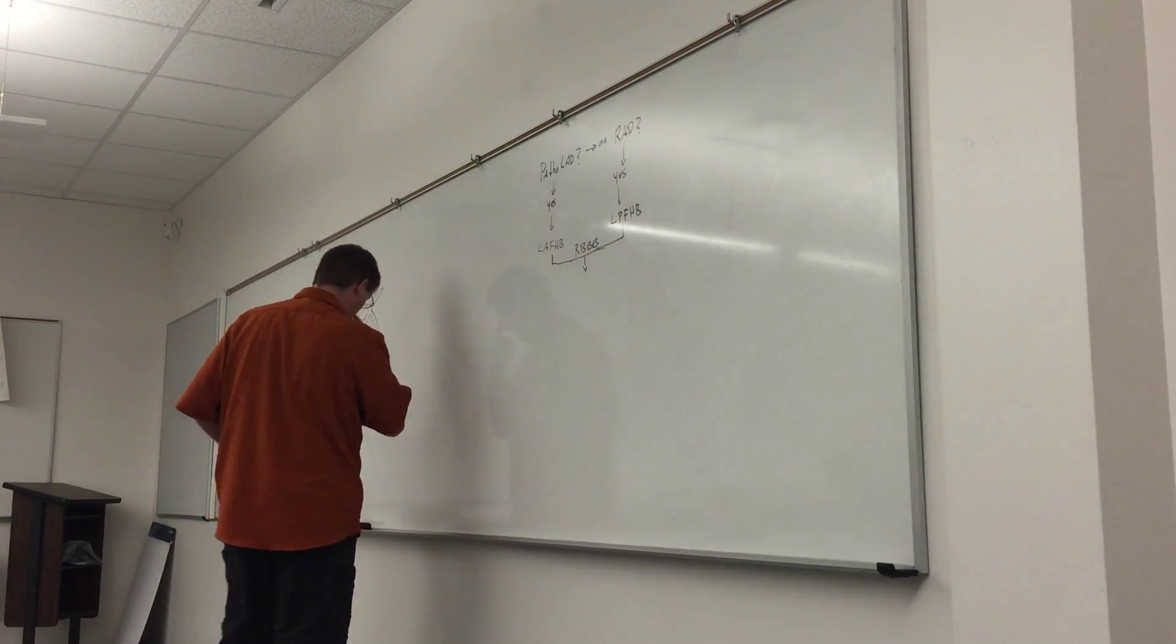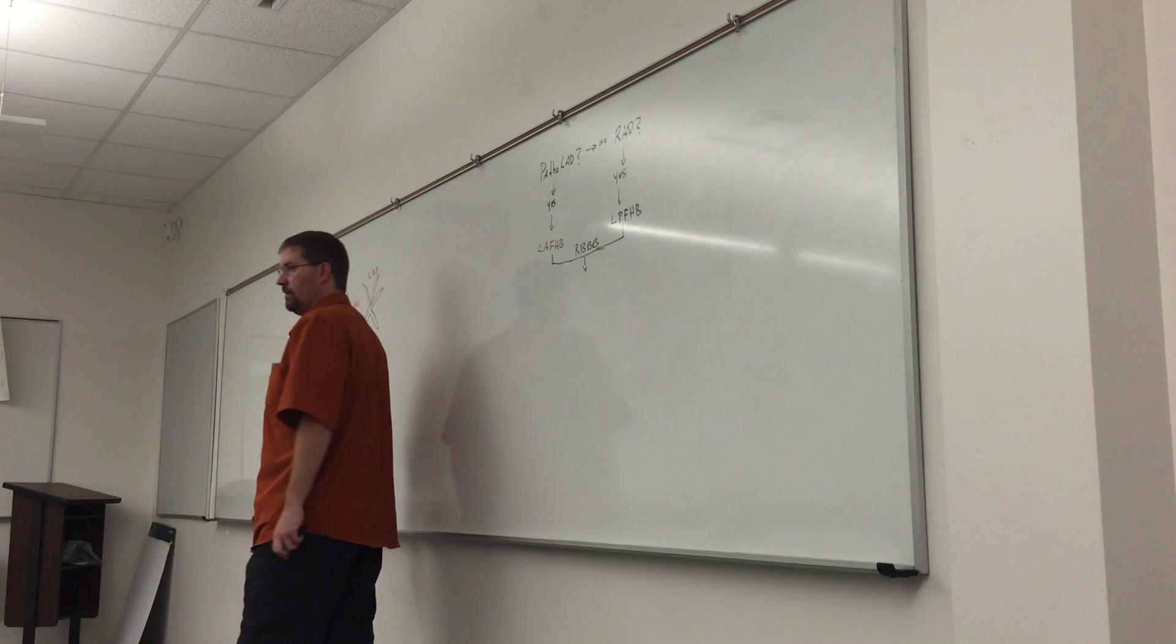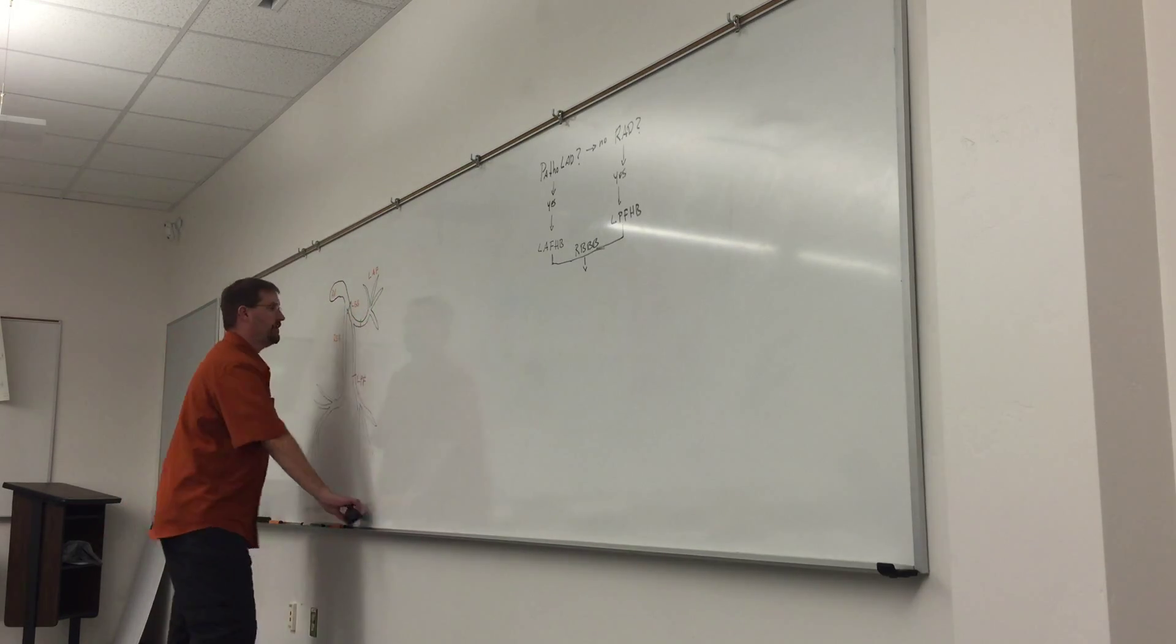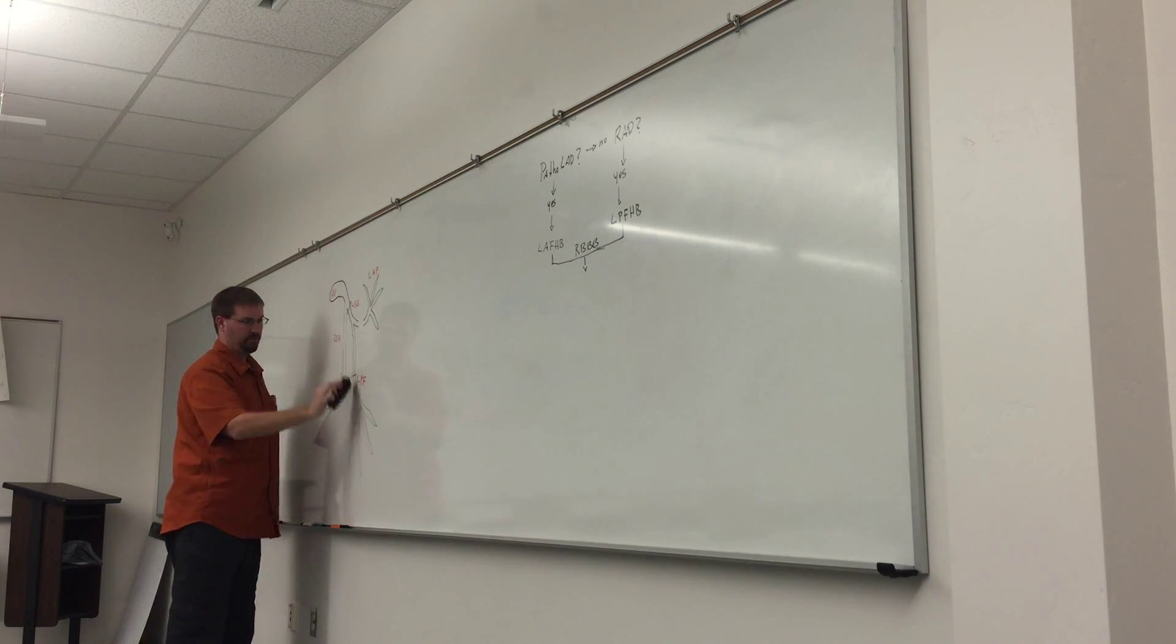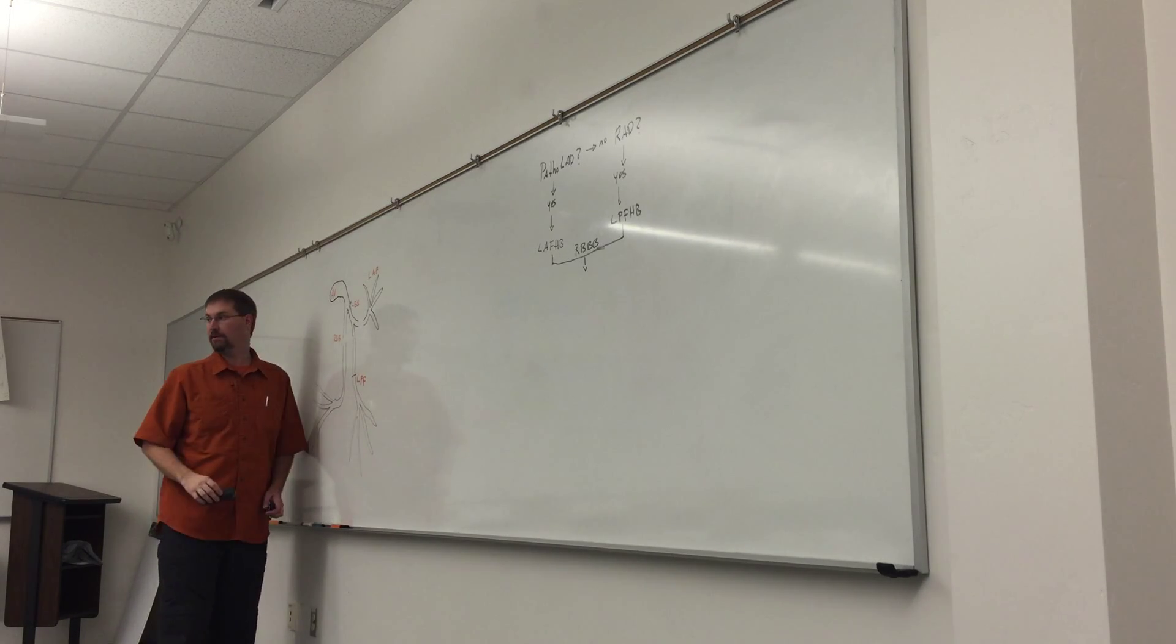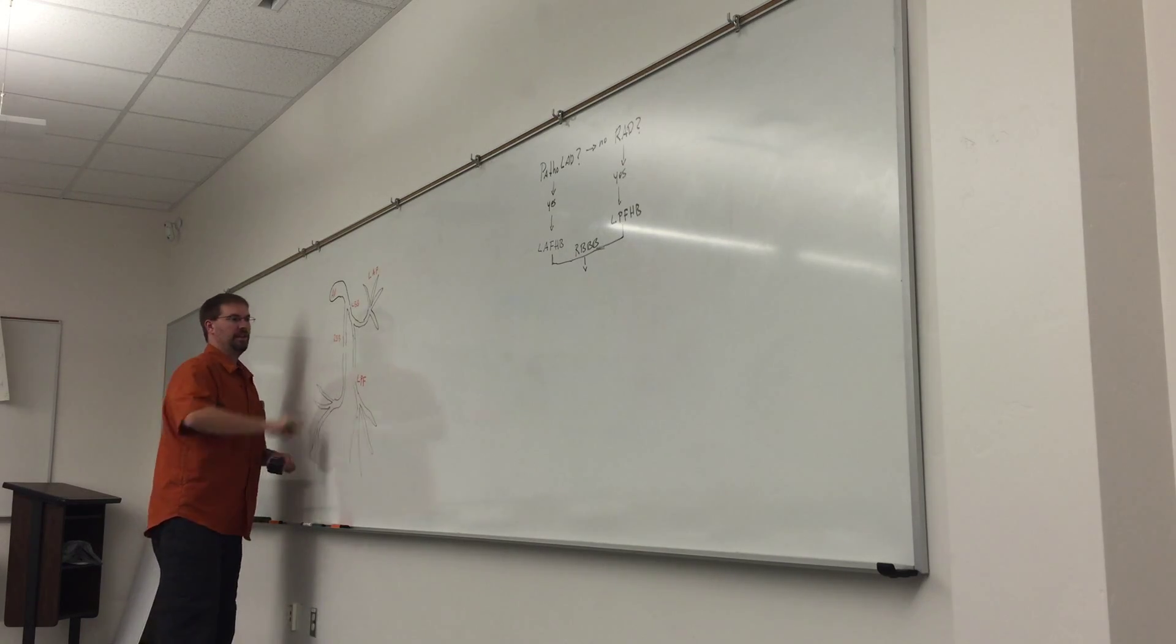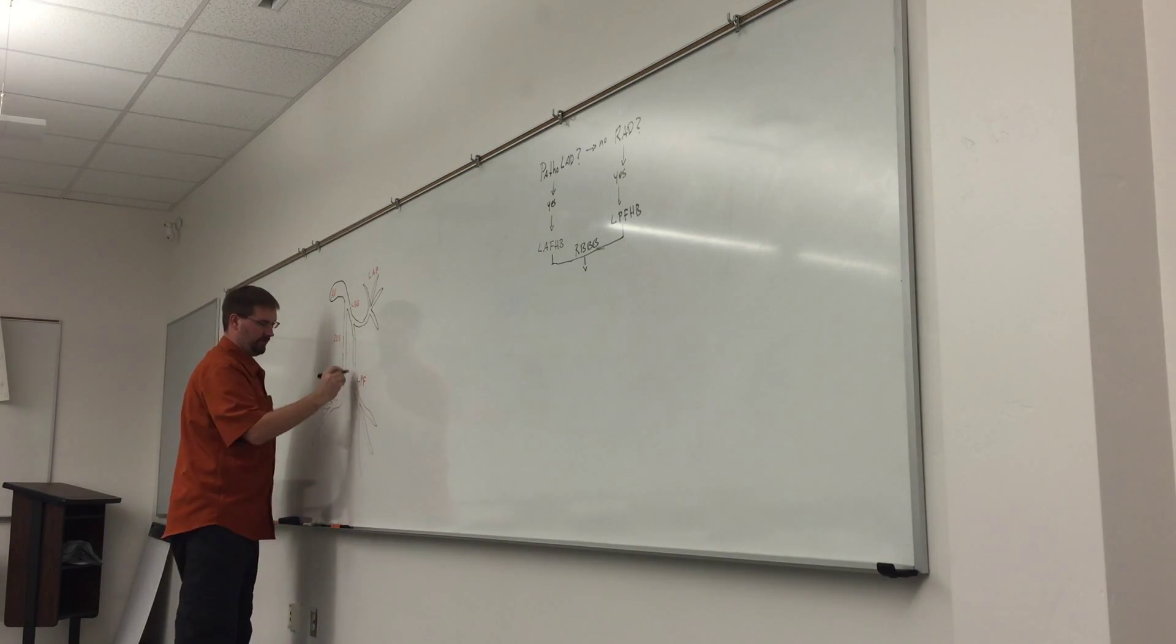Because here's the problem. If I have a left anterior fascicular hemiblock plus a right bundle branch block, what does that give me? Tri-fascicular. Tri-bifascicular. That gives me a bifascicular block. Does that make sense? So a left anterior fascicular hemiblock would be a block here, plus a right bundle branch would be a block here. That's two fascicles, and I still have my left posterior fascicle that's working. Does that make sense? However, if I take the case where I have a left posterior fascicular hemiblock and a right bundle branch block, the left anterior fascicle is still intact. Either way, I have a bifascicular block.